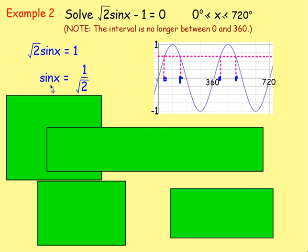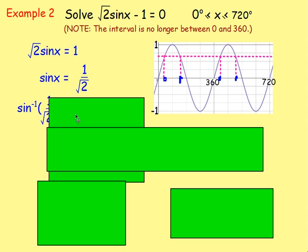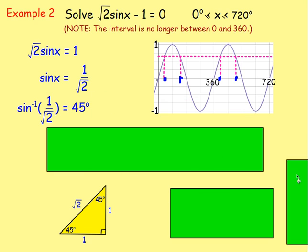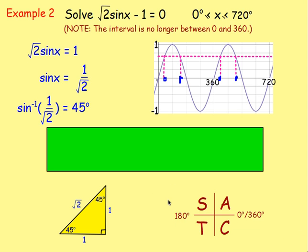After getting sin(x) equals 1 over root 2, do inverse sine of 1 over root 2. Get into the habit of using exact values — 1 over root 2 for sine, opposite over hypotenuse, is just 45 degrees. So inverse sine of 1 over root 2 is 45 degrees. From there, using CAST, you've got your calculator answer and also the answer in S. To get the one in S it's going to be 180 minus 45.